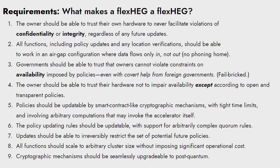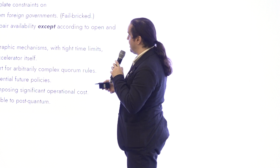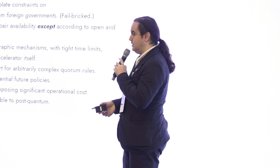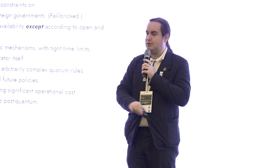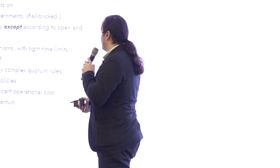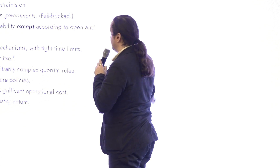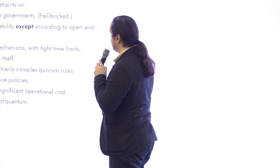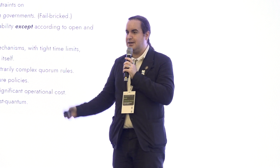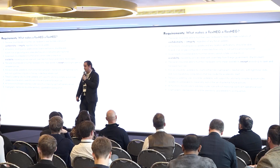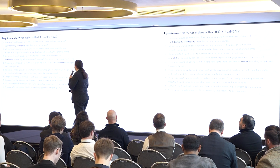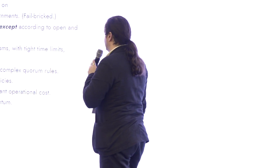The second criterion is that core functions of FlexHeg — including optional functions like location verification — should be able to work in an air gap or half air gap configuration, sometimes called a data diode configuration, where data can flow in but no data can flow out physically. There are ways of doing location verification where satellites transmit cryptographically authenticated streams, which you receive with an antenna, pipe in through a data diode, and do location verification without phoning home — without providing a covert surveillance channel.